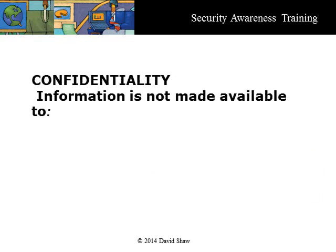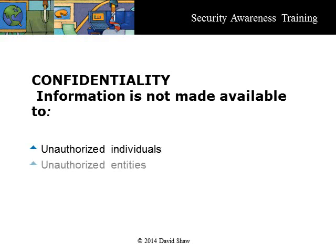Confidentiality is controlled by access measures provided by an information system. The concept is that information is not made available or disclosed to unauthorized individuals, entities, or processes. Ideally, if you do not have access to information, you should not be able to see it.